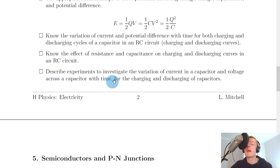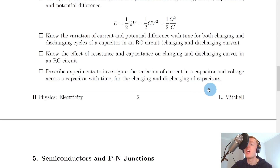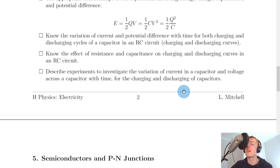Lastly, it says to describe experiments to investigate the variation of current and voltage across a capacitor with time for charging and discharging. You would set up your circuit with all the required apparatus, then measure at regular time intervals the potential difference across the capacitor and the current. You could record these in tables and plot graphs from them, and that way you'll see the results we were talking about.